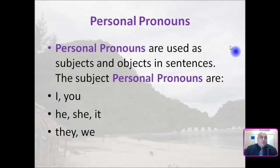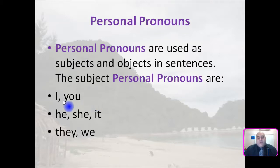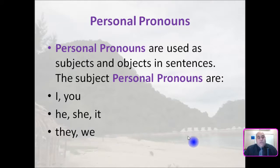We have two types of personal pronouns. We're going to talk about subject and object personal pronouns in sentences. The first ones I have examples for are subject personal pronouns: I, you, he, she, it, they, and we.